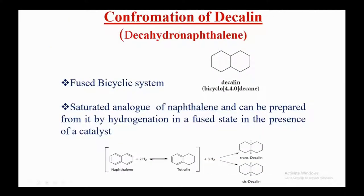Decalin, or decahydronaphthalene, is bicyclo[4.4.0]decane — a fused bicyclic system that is the saturated analog of naphthalene. It can be prepared from naphthalene by hydrogenation: first forming tetralin, and then further hydrogenation yields either cis-decalin or trans-decalin. These are the two types of fused conformations of decalin.